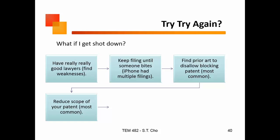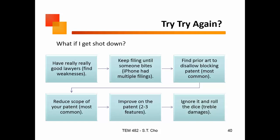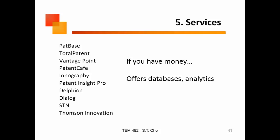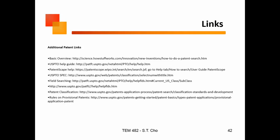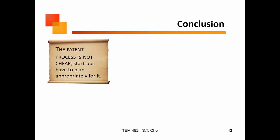What typically happens when a patent comes back to you is that you have to reduce the scope — it's too broad. You have to make it more specific. You can improve on two or three patent features and then refile, or you could just ignore it and roll the dice — which puts you in a treble-damage situation. If you have money, you don't have to do all of this yourself; there are database and analytics services out there that will do it for you, though those systems are pretty pricey. Here are some basic patent web links you can use to get information, much of it related to the USPTO.